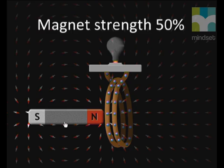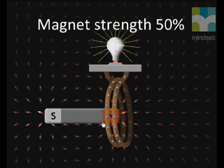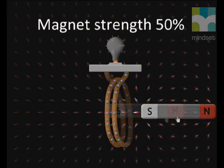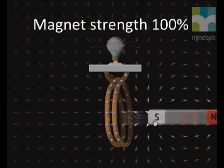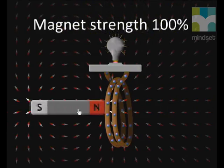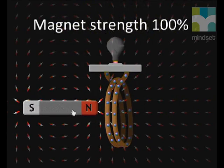The last factor that affects the size of the induced EMF is the strength of the magnet. We set up the demonstration so that the magnet has a strength of 50%, and move it in and out of the coil. Now let's change the strength of the magnet to 100%. We move the magnet at the same speed as before and the solenoid still has two turnings on it. The light definitely shines brighter than before, which proves that a stronger magnet will induce a greater current when the speed of the motion and the number of turns on the solenoid stays the same.